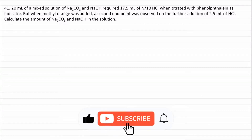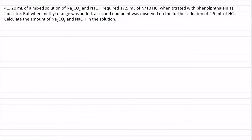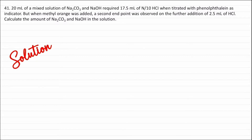Question 41. 20 mL of a mixed solution of sodium carbonate and sodium hydroxide required 17.5 mL of N/10 HCl when titrated with phenolphthalein as indicator. But when methyl orange was added, a second endpoint was observed on the further addition of 2.5 mL of HCl. Calculate the amount of sodium carbonate and sodium hydroxide in the solution.